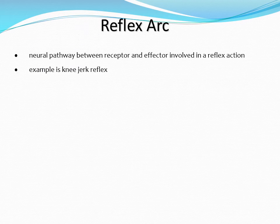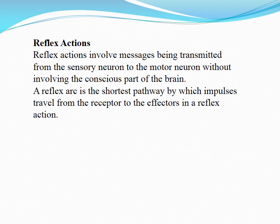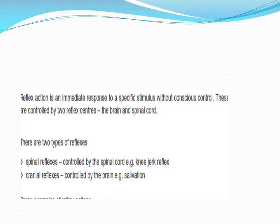An example is the knee jerk reflex — a sudden response of the knee when it feels a sudden tap. Reflex action involves a message being transmitted from sensory neurons to motor neurons directly, without involving the conscious part of the brain. A reflex arc is the shortest pathway by which impulses travel from receptors to the effector. For example, if a needle pricks your finger, you suddenly withdraw your hand — that is a reflex action. Sensory neurons directly pass the message to motor neurons and the hand is withdrawn. The conscious part of the central nervous system is not involved. Reflex action is the immediate response to a specific stimulus without conscious control.